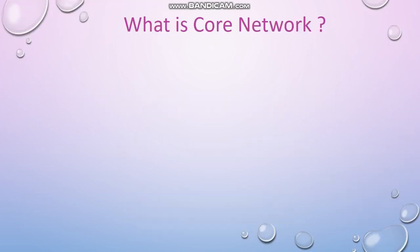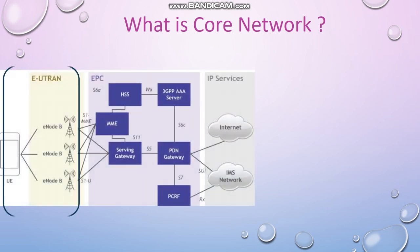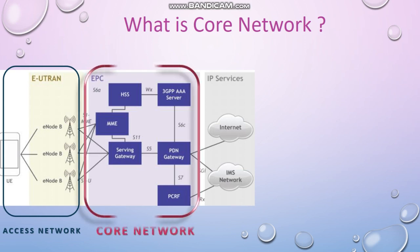What is Core Network? In telecommunication, networks can be divided into two parts: Access Networks and Core Networks. As you can see from the image, Access Networks is the part of the network which provides access to mobile users and is responsible for network coverage. Access Networks consist of base stations, denoted as E-NodeB in 4G networks.